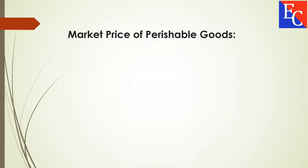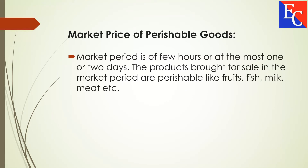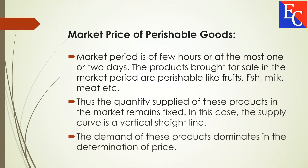Market Price of Perishable Goods. The market period is of few hours or at the most one or two days. The products brought for sale in the market period are perishable, like fruit, fish, milk, meat, etc. Thus, the quantity supplied of these products in the market remains fixed. In this case, the supply curve is a vertical straight line. The demand of these products dominates in the determination of price.